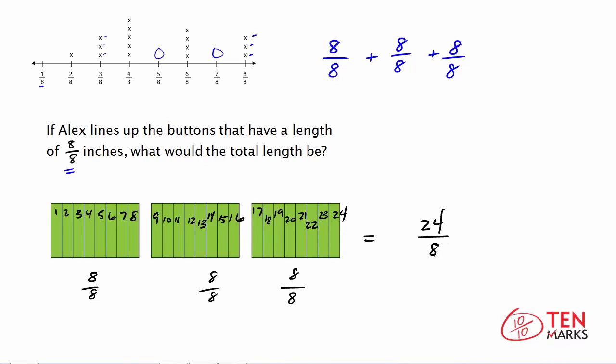So 24 eighths would be the total length. But you can write this value a different way. Notice that there are three wholes here and each whole is entirely filled. So that means that 24 eighths equals three wholes.